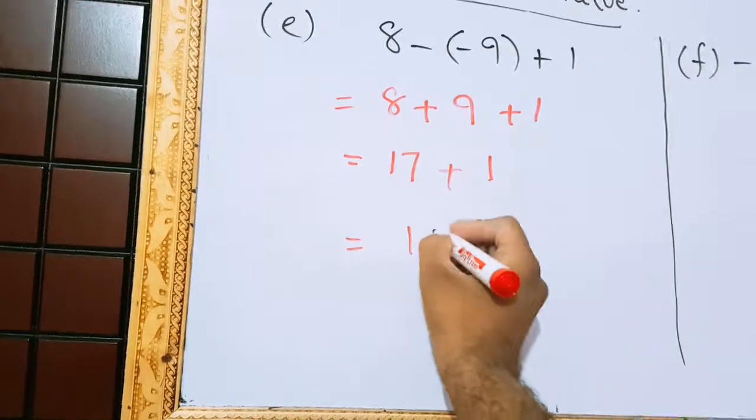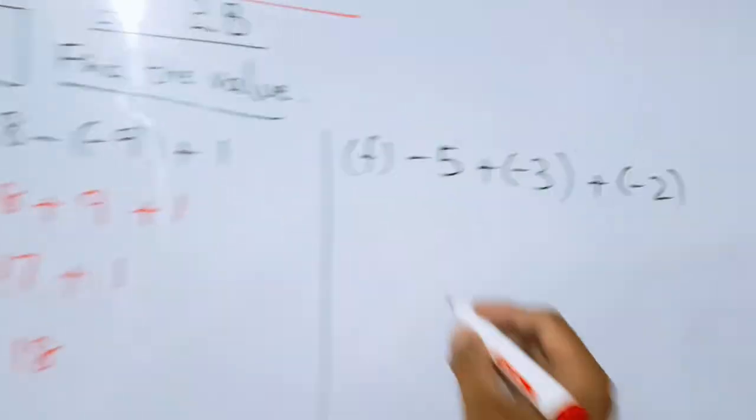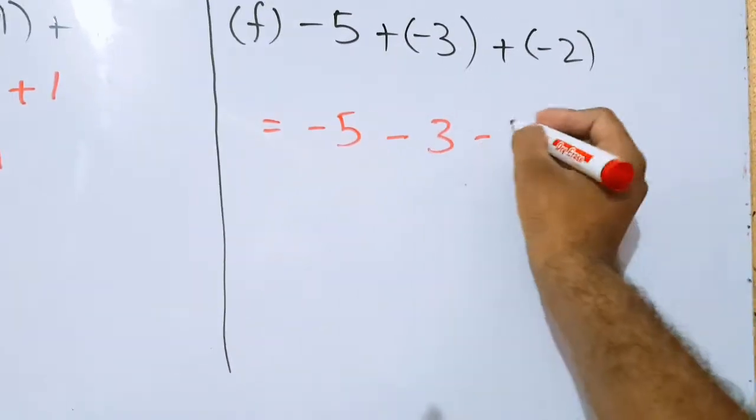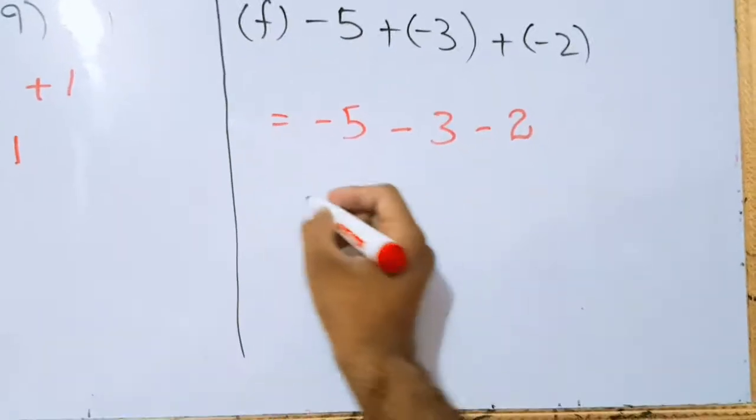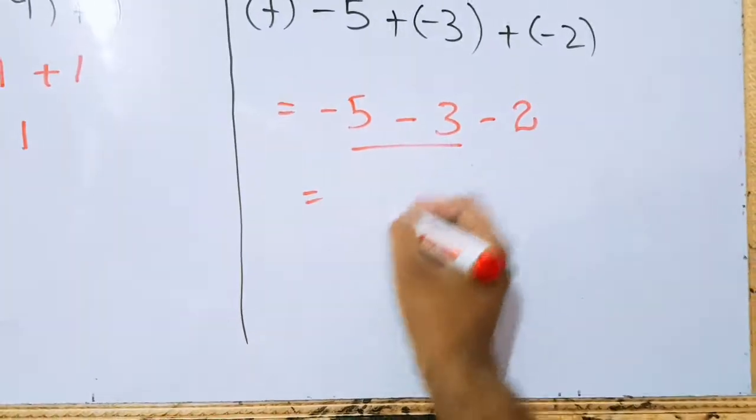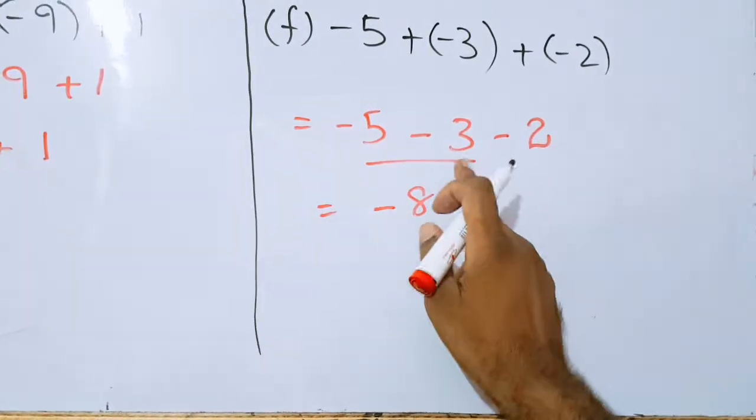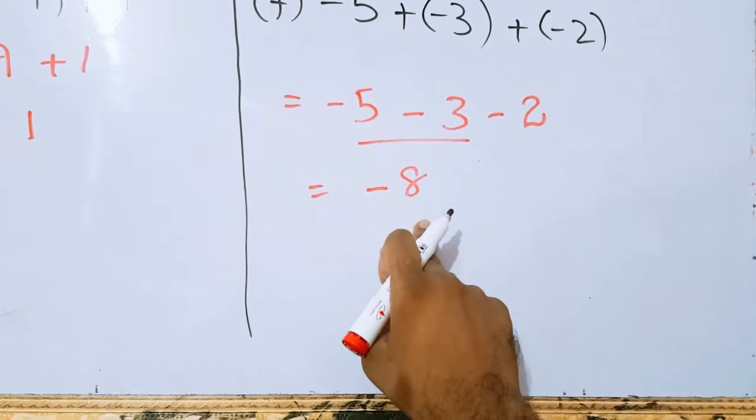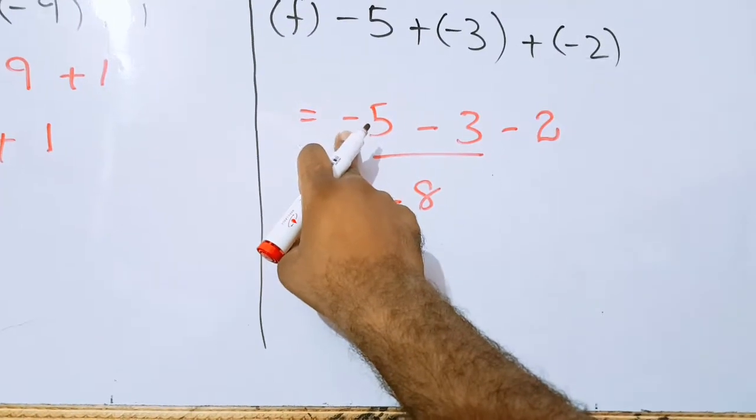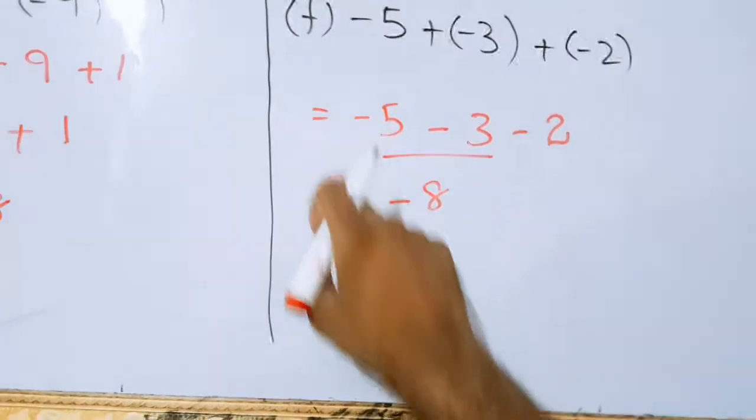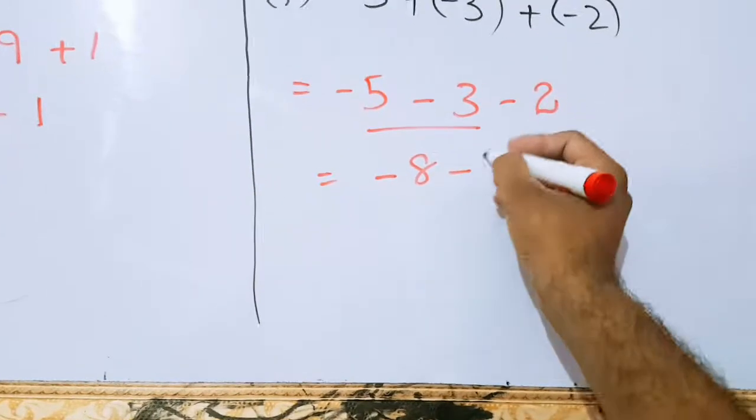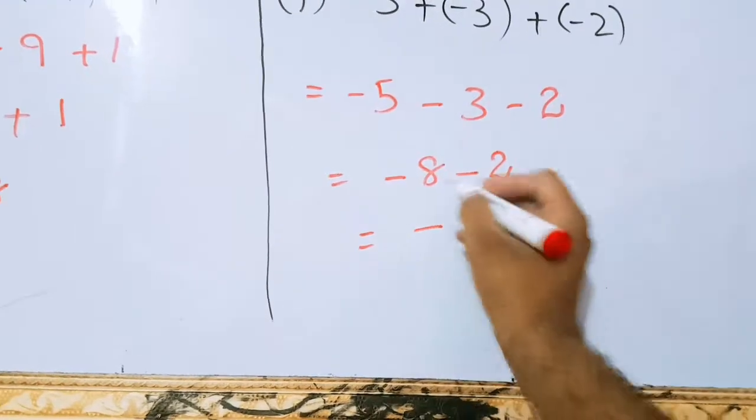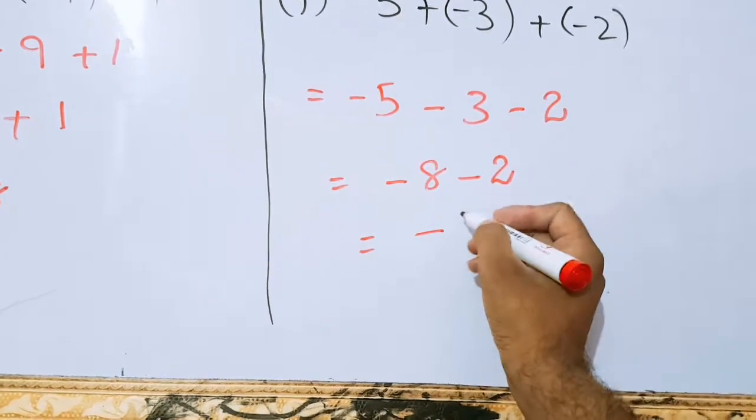Now come to f part. Minus 5 will be written as it is. Plus minus minus plus gives minus. I can select any two digits. Like I can select minus 5 and minus 3, which will be equal to minus 8. Minus minus plus, so addition operation will be performed, but the sign of the bigger value, which is actually 5, so its sign will be used. Minus 2 will be brought down as it is. Now again, the sign of the bigger value, which is 8, will be used. And minus minus plus, so operation of addition will be performed.